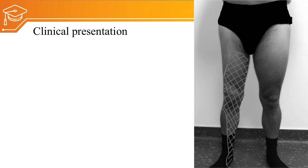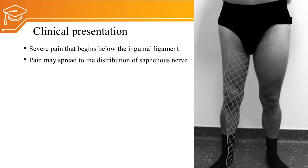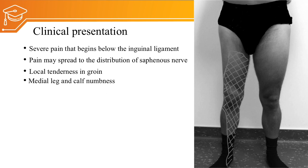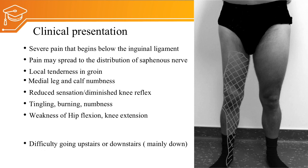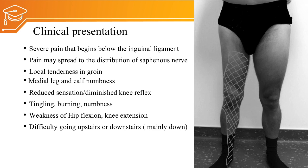The clinical presentations include motor and sensory involvement as the primary features. Severe pain that begins below the inguinal ligament is one clinical presentation; pain may spread to the distribution of the saphenous nerve — local tenderness in the groin region, medial leg, and calf. Numbness, reduced sensation, and diminished knee reflex are present; the knee reflex root value is L2, L3, L4. Tingling, burning, and numbness will be present at the L2, L3, L4 dermatome levels. Weakness of hip flexion and knee extension will be present in higher-level femoral nerve injury. Difficulty going upstairs or downstairs — mainly downstairs, because eccentric strength from the knee extensors (quadriceps) is required — and buckling of the knee, a feeling of giving way, are also clinical presentations due to quadriceps weakness.